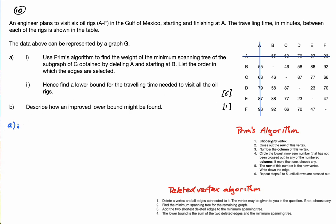Prim's algorithm: first choose any vertex, or if they give you the starting vertex, which they do, starting at B, we start at B. Cross out the row of this vertex, so B cross it out. Number the column of this vertex, so B is number one. Then circle the lowest non-zero number that has not been crossed out in any of the numbered columns.